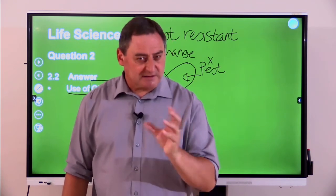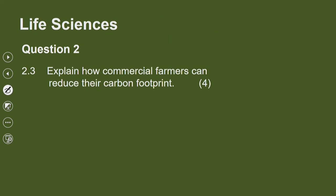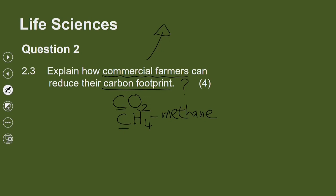Explain how commercial farmers on a big scale can reduce their carbon footprint. All of us, in using electricity and motor cars, release carbon dioxide into the atmosphere. In our landfills where things decompose, we release another carbon compound called methane. Both methane and carbon dioxide trap heat in the atmosphere and both contain the element carbon. Carbon footprint refers to the amount of carbon we release into the atmosphere per year, expressed in tons per year — per person or per nation.